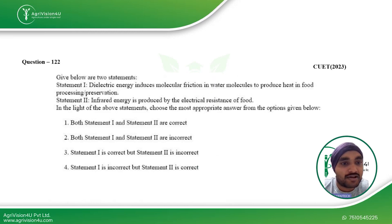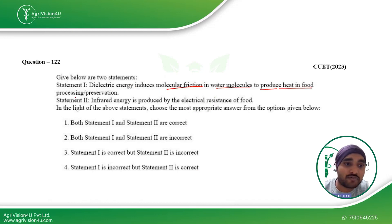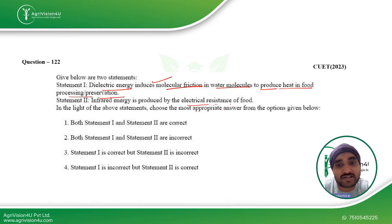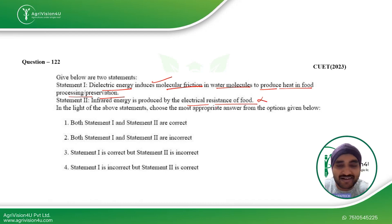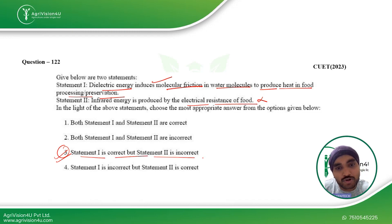Next, a statement-based question. Statement 1: dielectric energy includes molecular friction in water molecules to produce heat in food processing and preservation — yes, this is correct. Statement 2: infrared energy is produced by electrical resistance of food — this is not right. Heat energy may be produced by electrical resistance, but infrared energy will not be produced. So statement 1 is right, statement 2 is wrong, making the third option the correct answer.